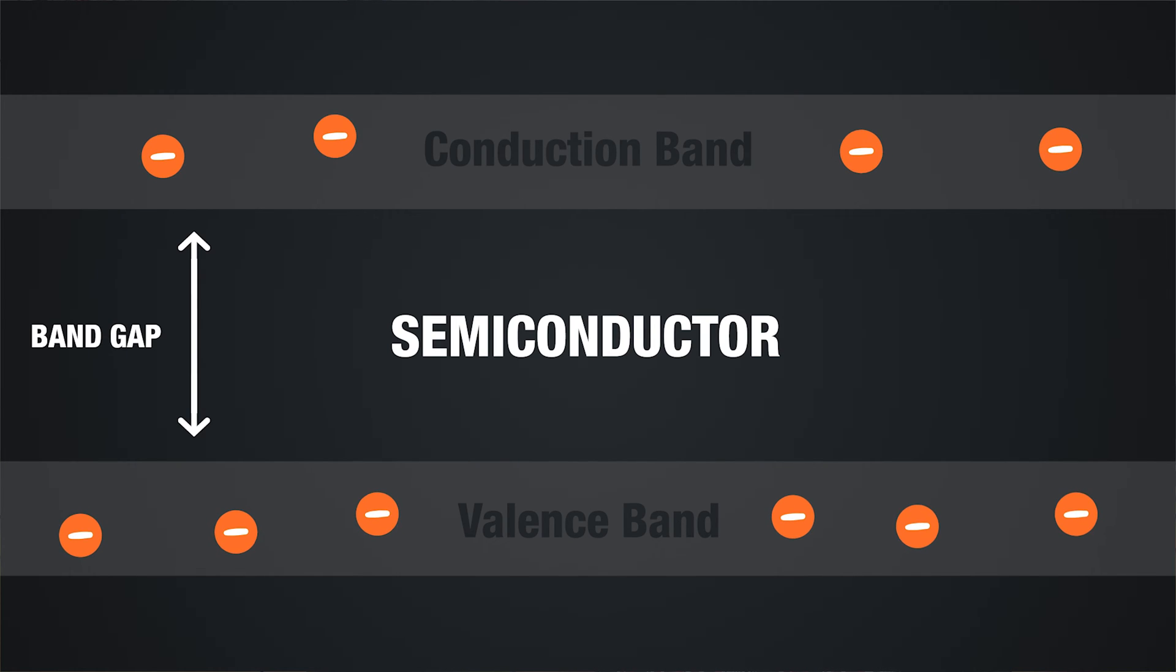The band gap in a semiconductor is smaller compared to an insulator and allows a valence electron in the valence band to jump into the conduction band if it receives external energy.